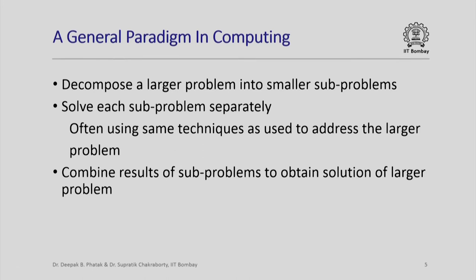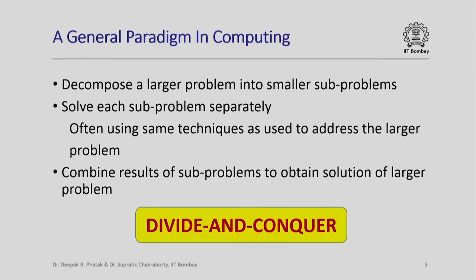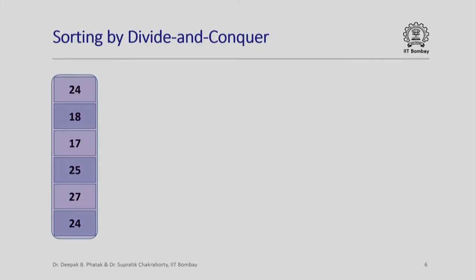This overall principle is called the paradigm of divide and conquer. We divide a large problem into several small subproblems such that we can solve them, and by solving the subproblems and combining the results, we can address the difficulty of the original larger problem. Let us see if we can actually sort a given array of integers using this notion of divide and conquer.